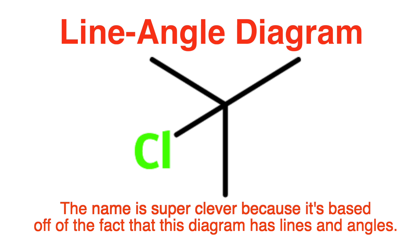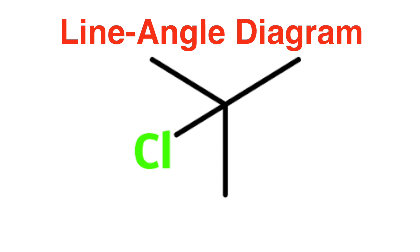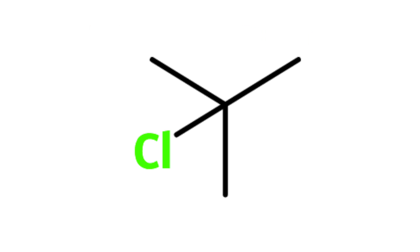Some diagrams known as line-angle diagrams will also omit the hydrogen atoms. The hydrogen atoms are still there, they're just not shown because they're implied to be there. I'll be using the line-angle formula for the duration of the video, because frankly, it's a lot easier to draw.